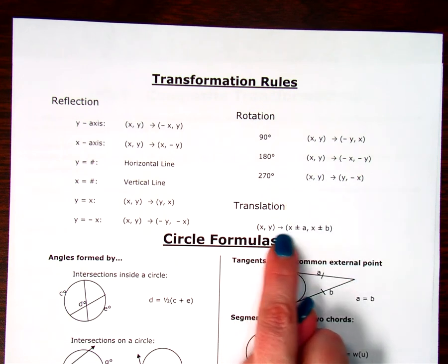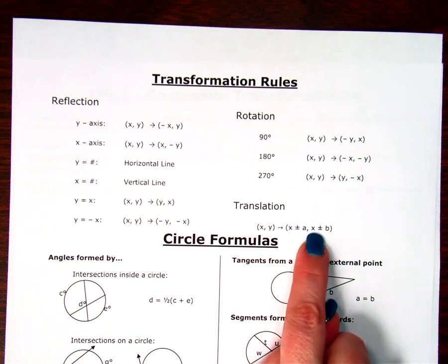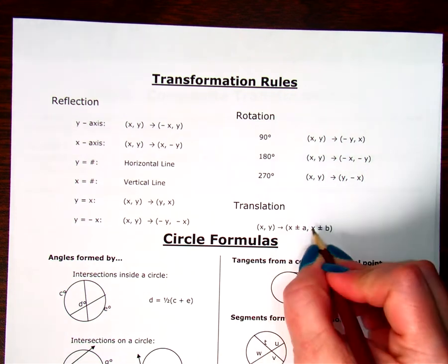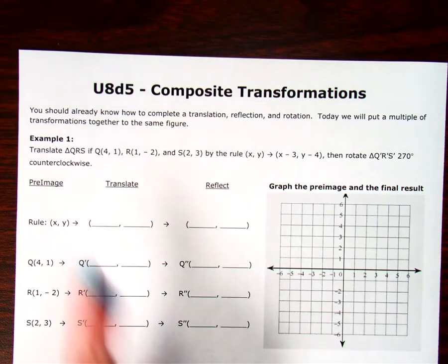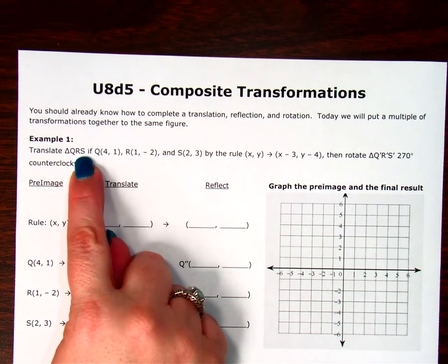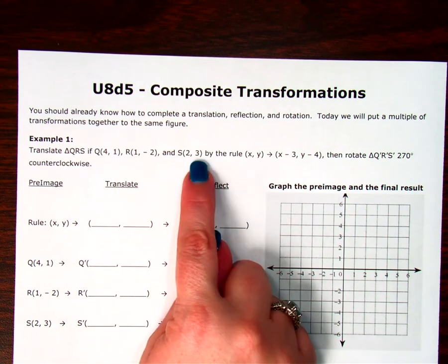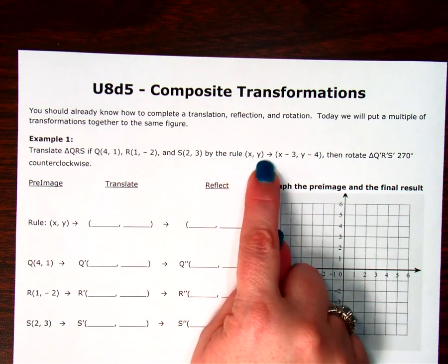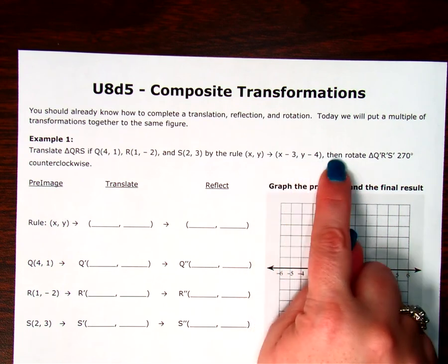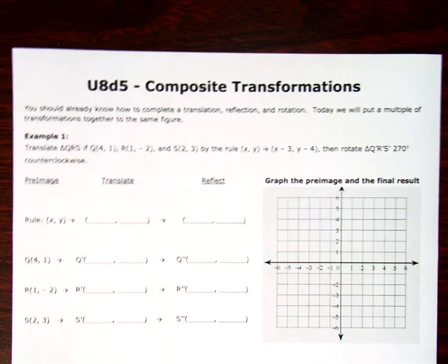And we have our translation information as far as coordinate notation, moving left and right, and moving up and down. Alright, so, translate triangle QRS, if Q is at (4, 1), R is at (1, -2), S is at (2, 3), by the rule (x, y) translates to (x - 3, y - 4). Then, rotate triangle Q prime, R prime, S prime, 270 degrees counterclockwise.